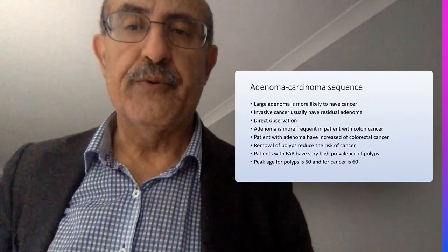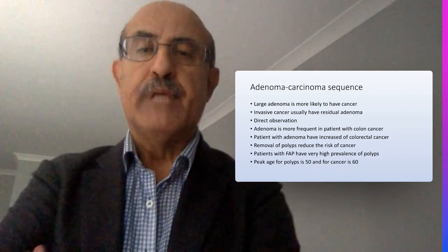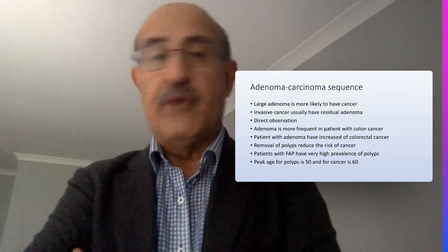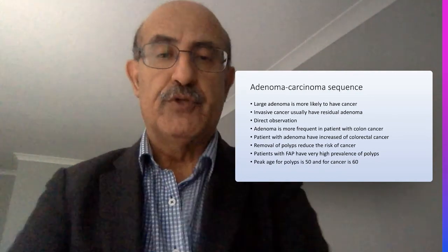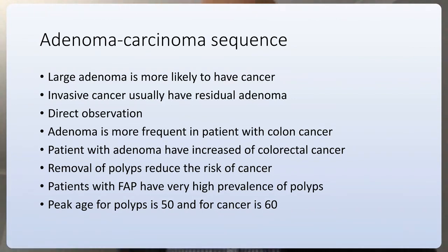The adenoma-carcinoma sequence is the best-demonstrated model for carcinogenesis in human beings, applicable to many other organs. The epidemiological evidence supporting it includes: large adenomas are more likely to contain cancer; when you have invasive colon cancer, there is almost certainly a residual benign adenoma in the specimen; and direct observation of polyps left alone eventually developing into malignancy.